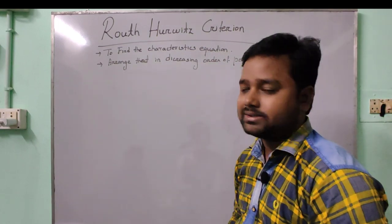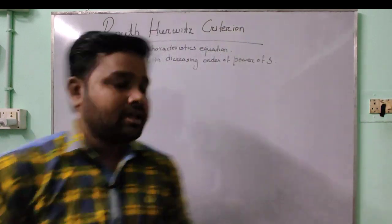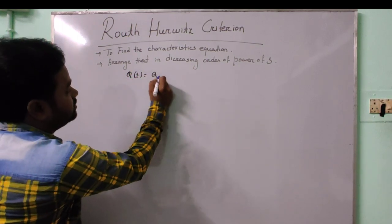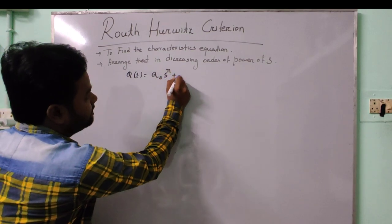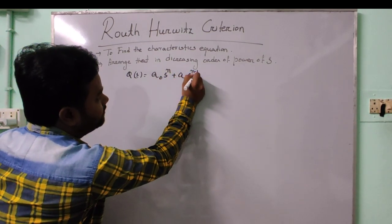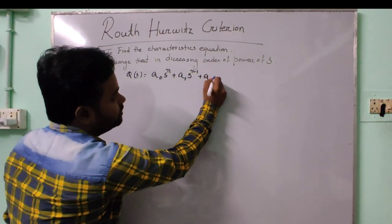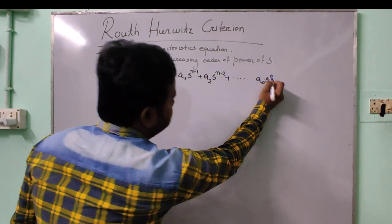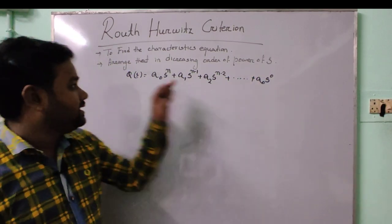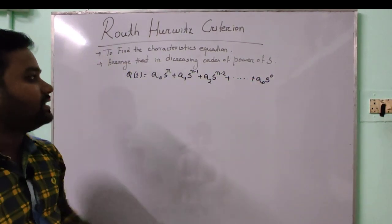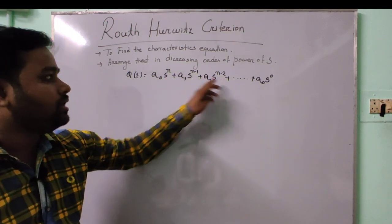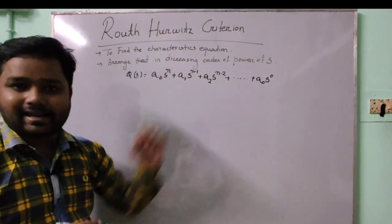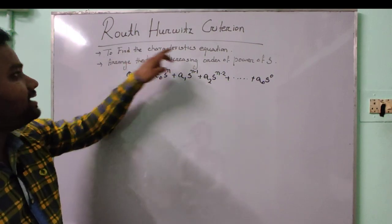Taking an example, let the characteristic equation Q(s) be equal to a₀sⁿ plus a₁sⁿ⁻¹ plus a₂sⁿ⁻² and so on, down to a₀s⁰. In this characteristic equation, the power of s goes from n, n minus 1, n minus 2, gradually decreasing to s to the power 0. This is the characteristic equation arranged in decreasing order of power of s.